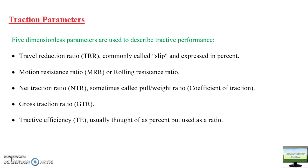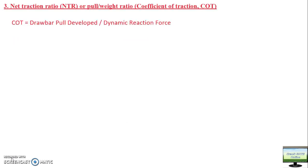Moving ahead, I will explain the concept of net traction ratio or pull by weight ratio. It is also known as the coefficient of traction (CoT), also denoted as mu (μ). This CoT is basically the ratio of draw or pull developed by the tractor and the dynamic reaction force Rr. What Rr is, I have explained in my previous video. So this is the ratio of two forces — the numerator is draw or pull, and the denominator is dynamic reaction force. Basically, it is called the pull by weight ratio.